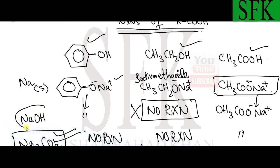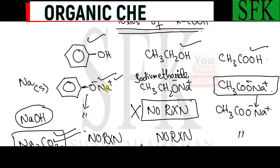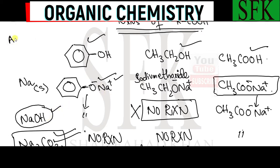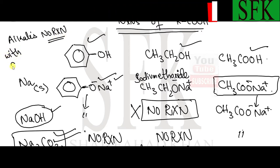The next reagent is sodium hydroxide, which is an alkali. Phenol gives a positive result with the alkali because phenol is acidic, and the product is sodium phenoxide. Sodium hydroxide has no reaction with ethanol — in fact, no alcohol has any reaction with alkali. Alkalis and alcohols do not react.